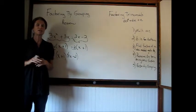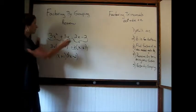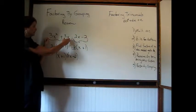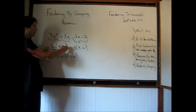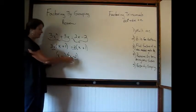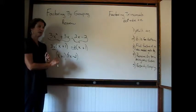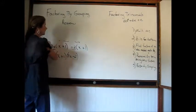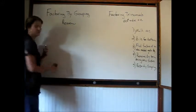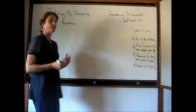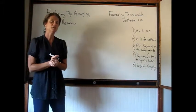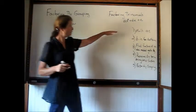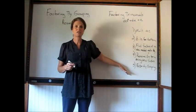We did all this yesterday so this should all be review. Factoring by grouping: you see four terms, you group each set, factor out what they have in common, and factor that common factor out again to show what's left. Now this new type of factoring is called factoring trinomials, and the whole goal is to get our problem to look like a factoring by grouping polynomial — which means it has to have four parts.